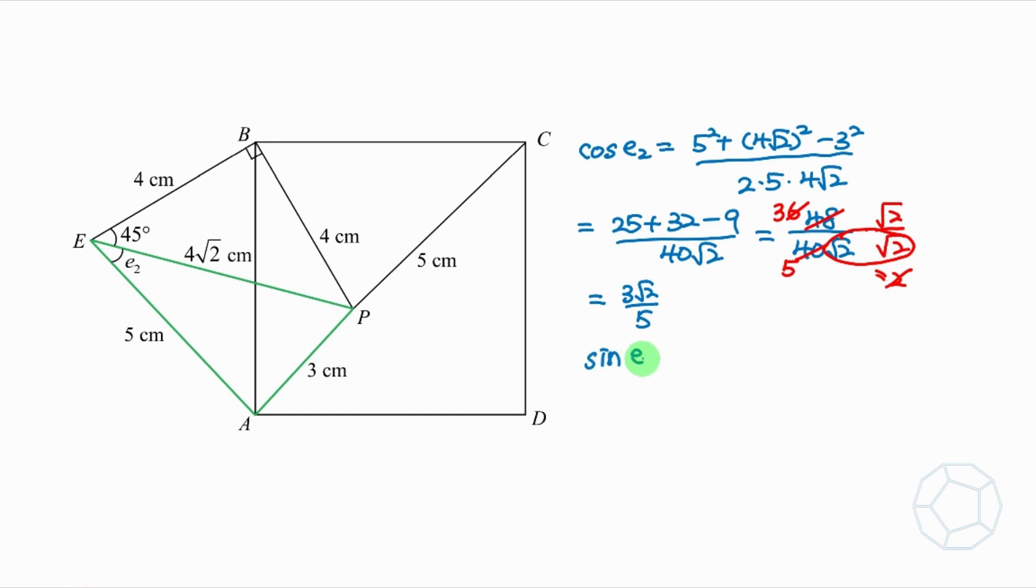Let's also find the value of sine E2. We'll use that in the next triangle. Sine E2 is square root of 1 minus cosine square E2. This is equal to square root of 1 minus 3 root 2 over 5 whole square. So the simplest form is root 7 over 5. So these two values will be used in the final part.